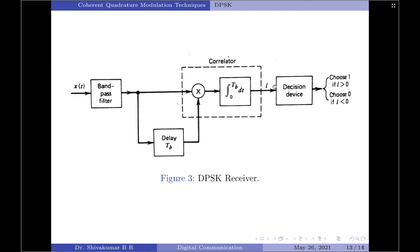If the correlator output is positive, it means the phase difference between the waveforms received during the interval 0 to Tb lies inside the range −π/2 to +π/2, and the receiver decides in favor of symbol 1. If the correlator output is negative, the phase difference lies outside the range −π/2 to +π/2, and the receiver decides in favor of symbol 0. In summary, if the decision variable L is greater than 0 we choose symbol 1, otherwise if L is less than 0 we choose symbol 0.